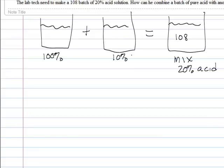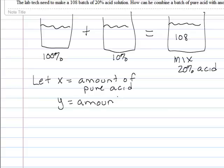We don't know how much this is, in order to make 108. So I'm going to let X equal amount of pure acid, and Y be the amount of the 10% acid.